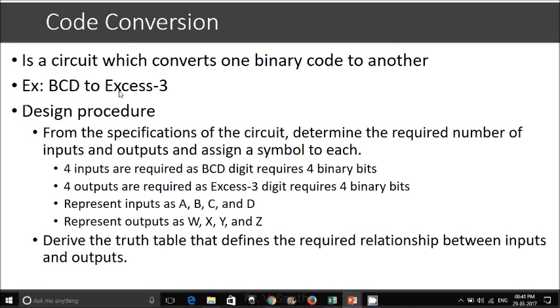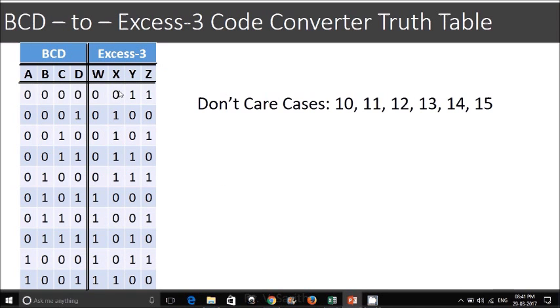The next step is to derive the truth table. This is the truth table from BCD to XS3 code converter. If you see ABCD, this is the BCD code completely and this is the XS3 code which is represented as an output.